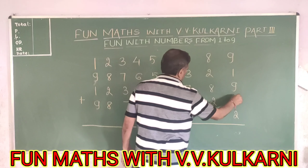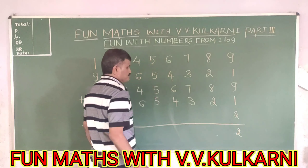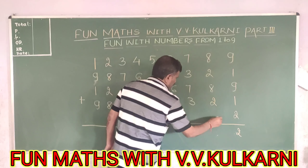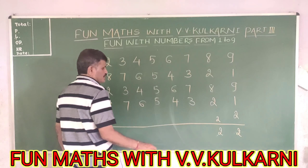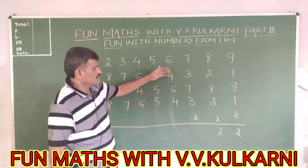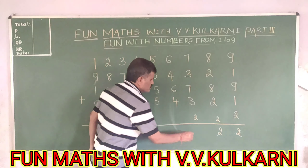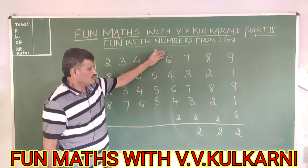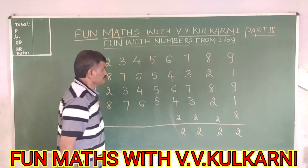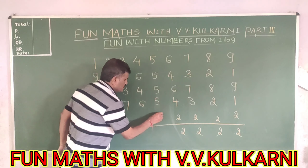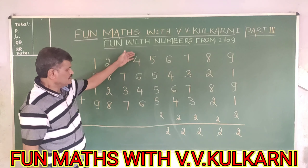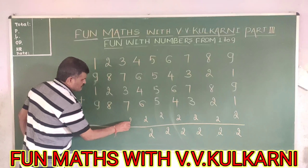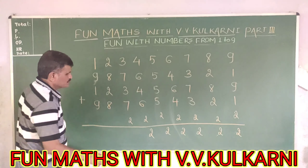9 plus 1 is 10. 10 plus 10 is 20. This gives us 22, and again we will get carry 2. This is 20 plus 2 is 22. Again we are going to get 22. I am putting 2 here — again we get 22. Here you see, this is 2 carry 22. This is 20, and if I take 2 carry, this is 20 and 20 plus 2 is 22.